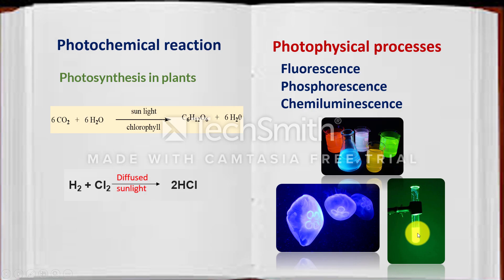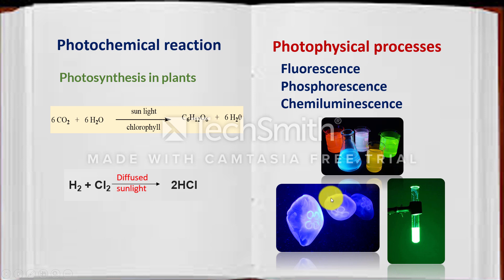A very good example of a photochemical reaction is photosynthesis in plants. For the synthesis of food in plants, sunlight is very essential. Another example is the reaction between hydrogen and chlorine to form hydrogen chloride, where diffused sunlight is also required. The phenomena like fluorescence, phosphorescence, chemiluminescence, and bioluminescence are photophysical processes, which I will be explaining in the next part.